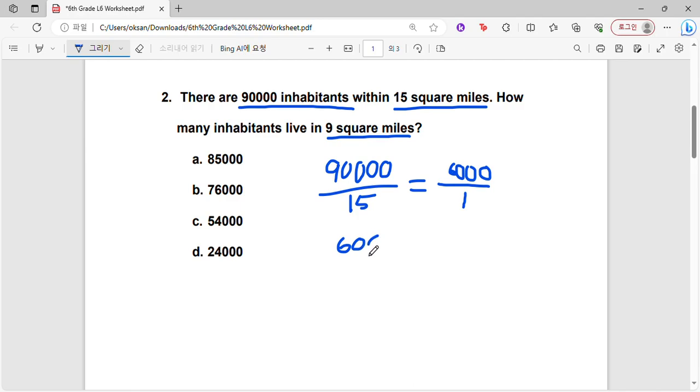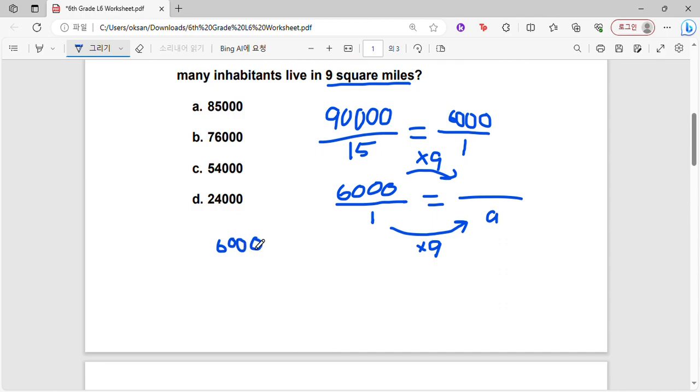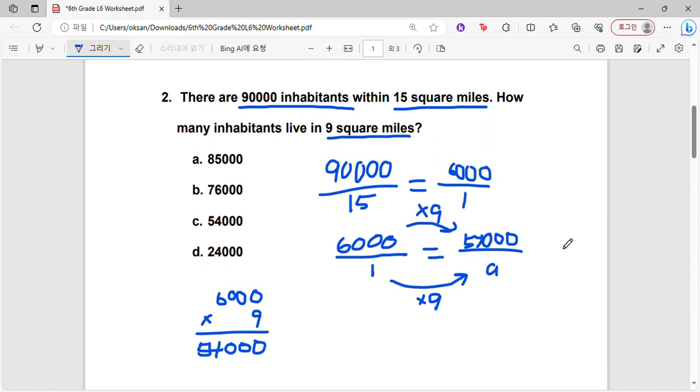And now we'll use this to find the number of inhabitants in 9 square miles. So basically, we would just have to multiply by 9, right? Because we have to multiply 9 on the bottom, so then we multiply 9 on top, which is basically the same thing as just doing 6,000 times 9. 0 times 9 is 0. 0 times 9 is 0. 0 times 9 is also 0. And then 6 times 9 is 54. So 54,000 inhabitants will live in 9 square miles. So C is the correct answer.